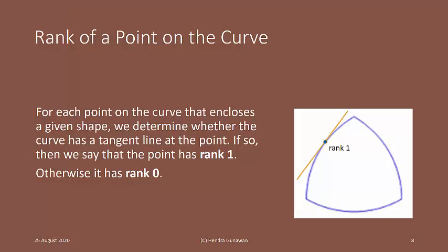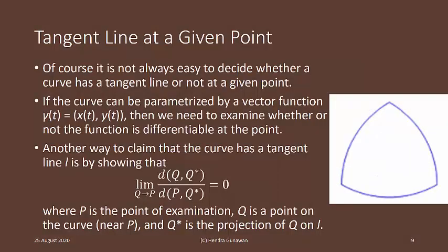So, this point has rank 1, and that point has rank 0. Of course, it is not always easy to decide whether a curve has a tangent line or not at a given point. If the curve can be parametrized by a vector function, gamma of t, which is equal to x of t, y of t,